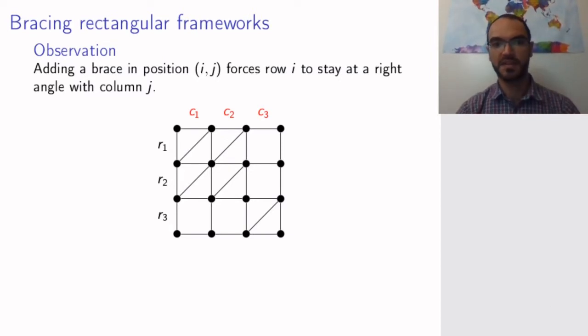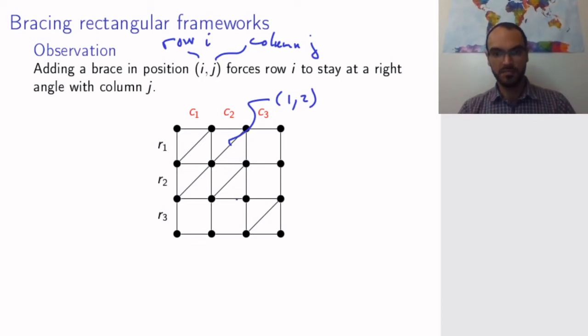Let's look at this problem in greater detail and see if this example is good enough or not. One observation we make is that when you add a brace in position i,j, meaning you are in row i and column j, you force that whole column to be perpendicular or at right angle to that whole row. Remember, in the end you want all columns to be perpendicular to all rows. This is the key principle: we want to add as few braces as possible, and every brace we add ensures that the column and row where this brace is stay at right angle to each other.